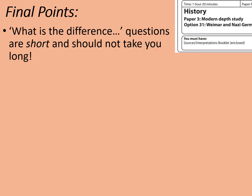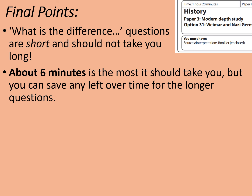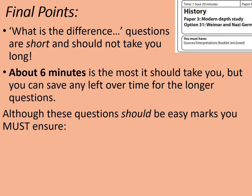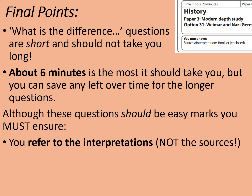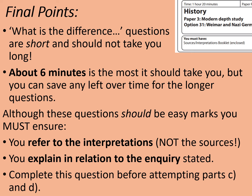Let's sum up. What is the difference questions are short and should not take you long — about six minutes maximum, but you can save any leftover time for longer questions. Although these should be easy marks, you must refer to the interpretations and not the sources, and explain in relation to the inquiry stated — in this case, the reasons why Hitler became chancellor in 1933. Complete this question before attempting parts C and D, as one leads into the other. That concludes this rapid revision video. Thanks very much for watching — please like the video and subscribe. Goodbye.